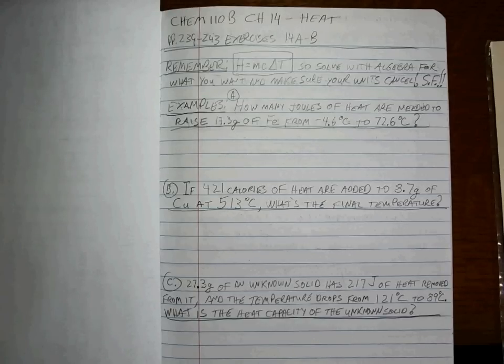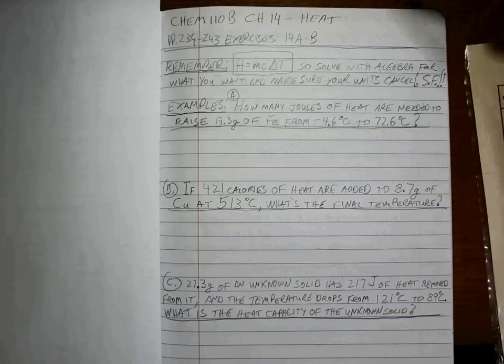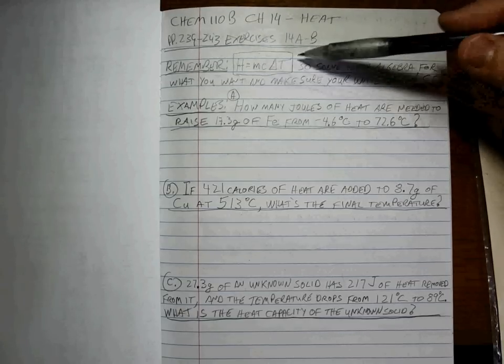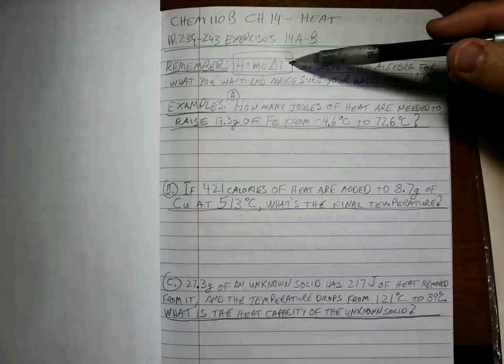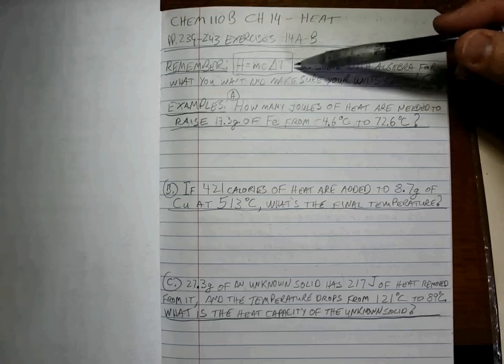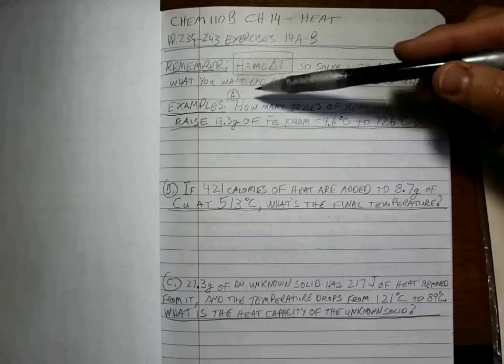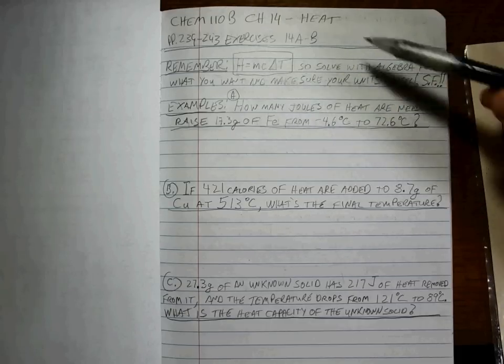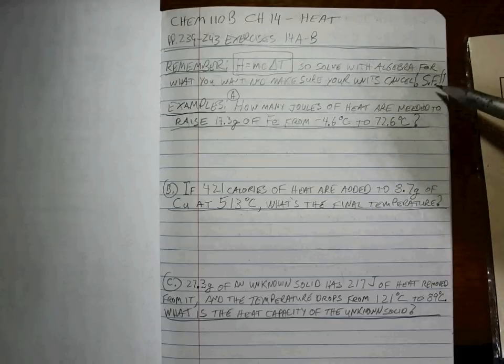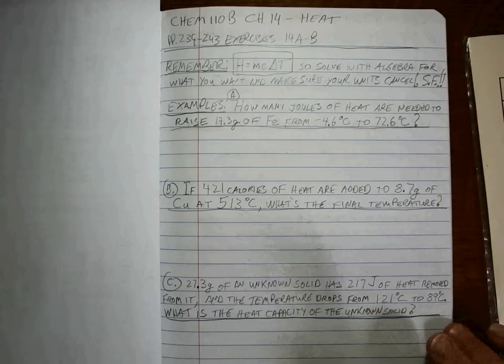Okay guys, we're starting with heat exercises 14A and B on pages 239 to 243. Remember the formula is H = mc∆T, and heat H is not the same as temperature T. Think of temperature as a measure of the intensity and heat is the measure of how much. In any case, to solve these you basically need to use algebra and just make sure that your units cancel.